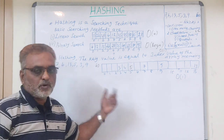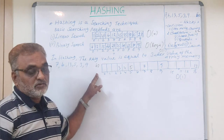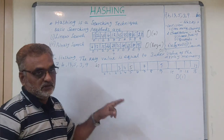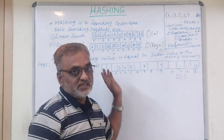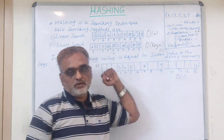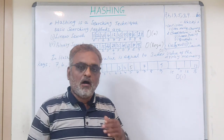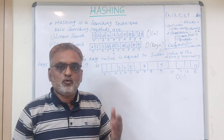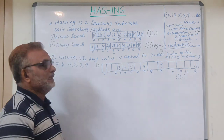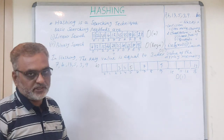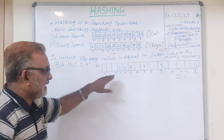But there is a problem. If you want to search for a key far away — for example, 60 — you would have to store key 60 in the 60th location, and all the memory locations in between get wasted. To overcome this problem, we use a hash function.